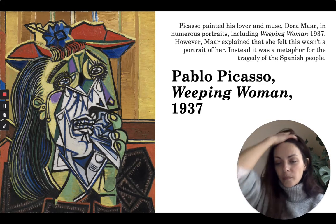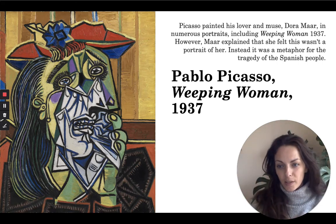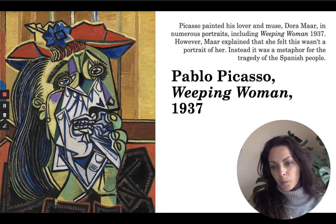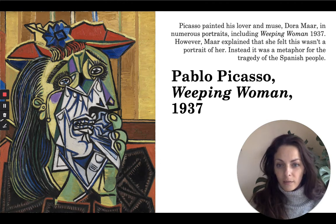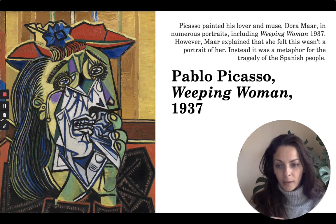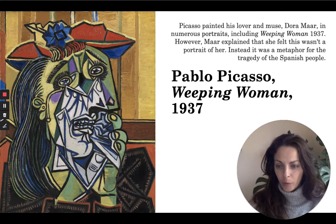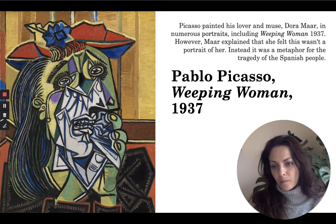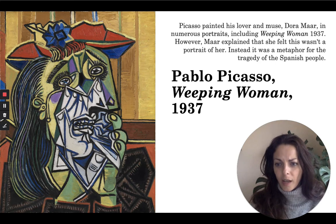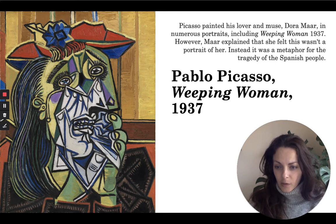For us to look at in greater detail, we're going to look at The Weeping Woman by Picasso. It was painted in 1937 — a point in Picasso's painting history where he had already essentially invented cubism with Georges Braque, nearly 30 years after the first cubist paintings started to emerge.